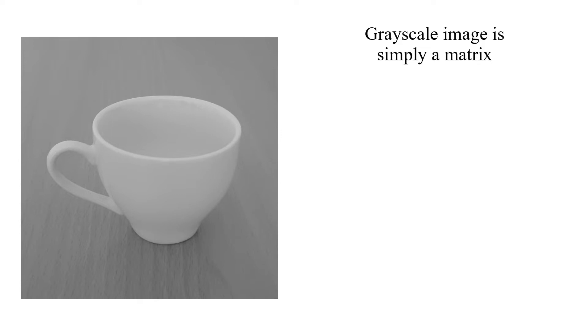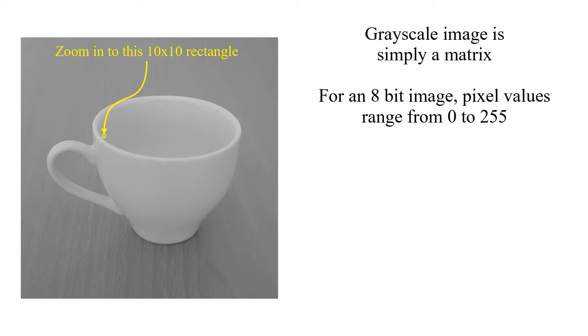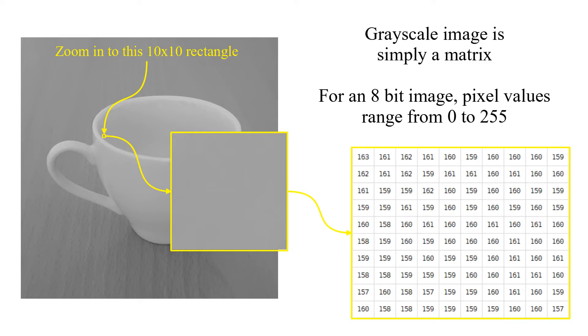Grayscale image is simply a matrix. For an 8 bit image pixel values range from 0 to 255. Let's zoom in to this 10 by 10 rectangle. These are the brightness values for pixels inside the rectangle.